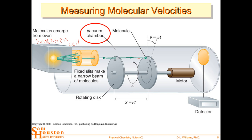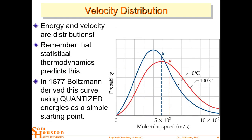To get different velocities, you move the gap — move the disks relative to each other and sweep through. Really close gap gives really fast molecules that hit both disks very quickly. Move that gap around and you get the slow molecules coming through.